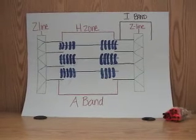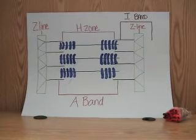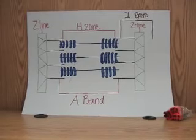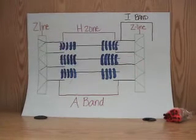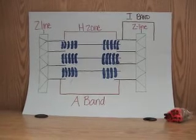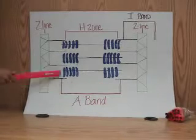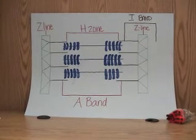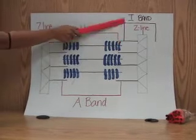Here we have a sarcomere, which is a highly ordered unit of thick and thin filaments. It's measured from Z-line to Z-line. Inside of the Z-line lies the A-band, which is the length of the thick filament. We also have the I-band, which is the length of only thin filaments.